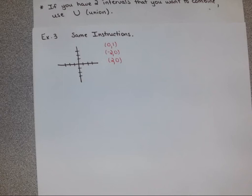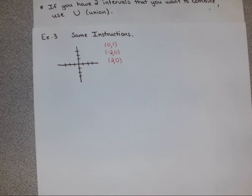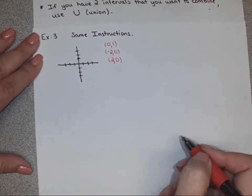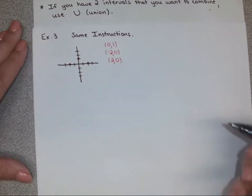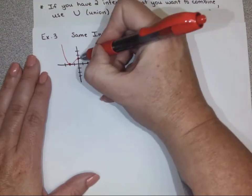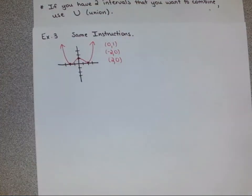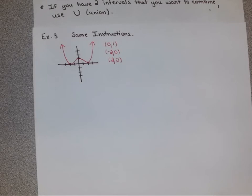Plot zero one, negative two zero, and two zero. Then make a curvy W shape with arrows going up in both directions. It shouldn't be jagged — it should be a curvy W. By the way, if I asked you if this is a function, what would you say? Yes — it passes the vertical line test. Even though it's weird, it still passes the vertical line test, so it is a function.